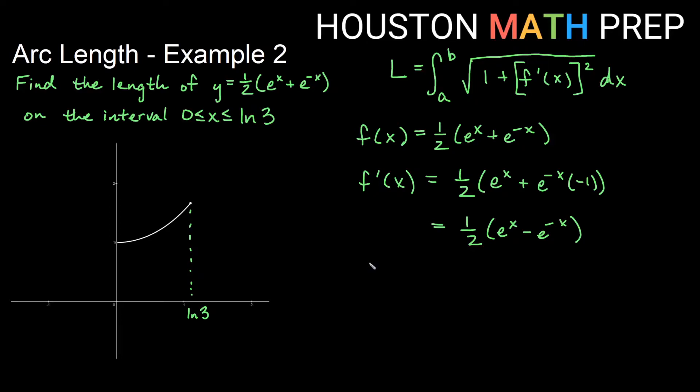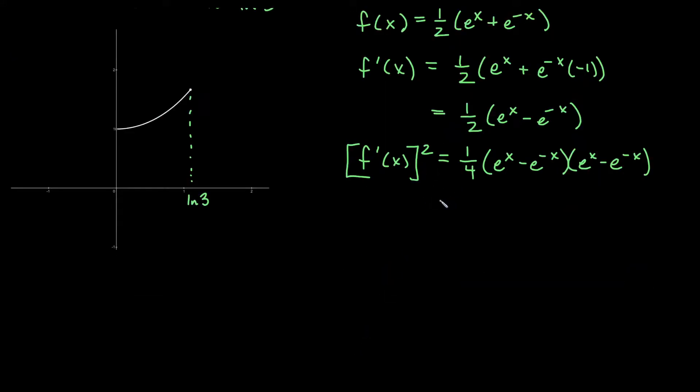Now we will need to square that. So we will take f prime of x and we're going to have to square it and we have multiple terms, so we'll need to do some distributing. So first thing I know, if I square one-half, a half times a half will give us a fourth. And if you're having trouble seeing how to square this, then I would recommend writing out two copies so that you can see the distributing. But if you know the shortcut formula for doing this, then great. I'm going to assume that you don't and go through this just to be sure.